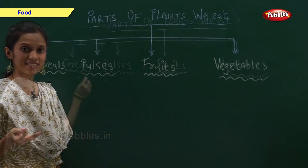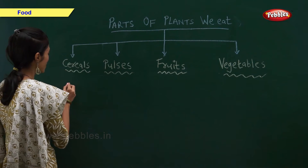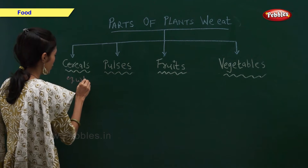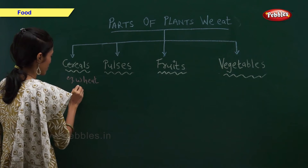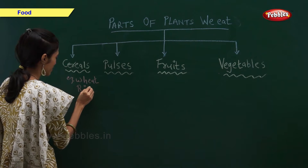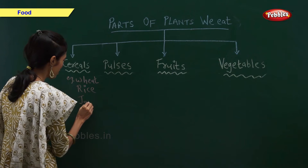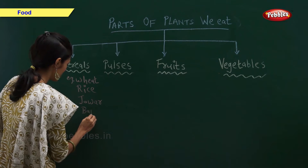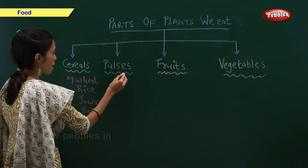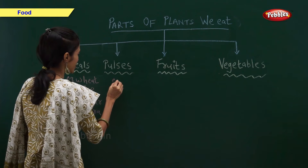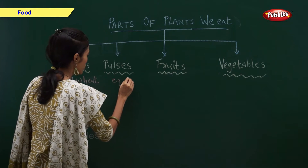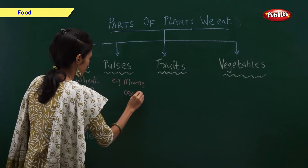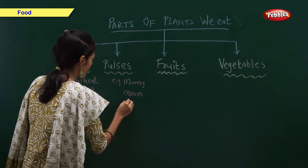Let us see their examples. Cereals — examples of cereals are wheat, rice, jowar and bajra. Pulses — examples of pulses are moong, gram and chana dal.